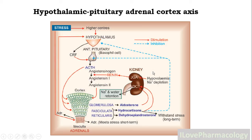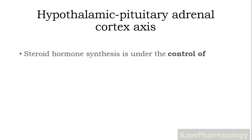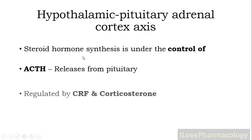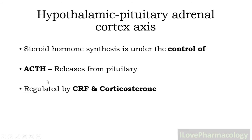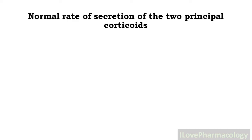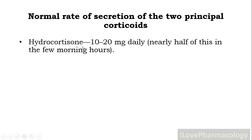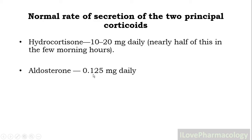Steroid hormone synthesis is mainly under control of ACTH released from the pituitary, and also regulated by the corticotropin releasing factor as well as corticosterone, as seen previously. The normal rate of secretion of the two principal corticoids: hydrocortisone is released at 10 to 20 milligrams per day, and aldosterone at 0.125 milligrams per day. Nearly half of the hydrocortisone is released during the morning hours.